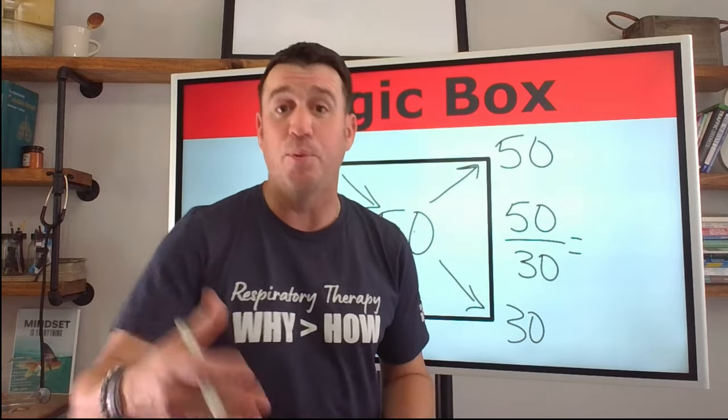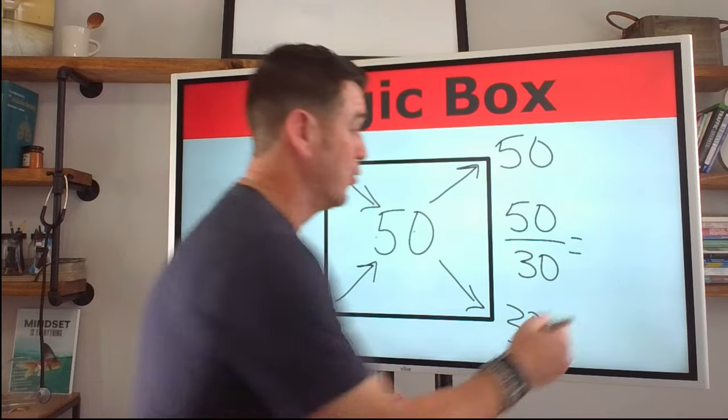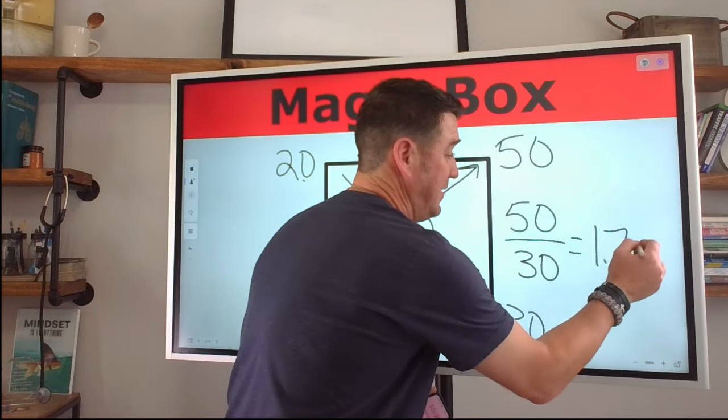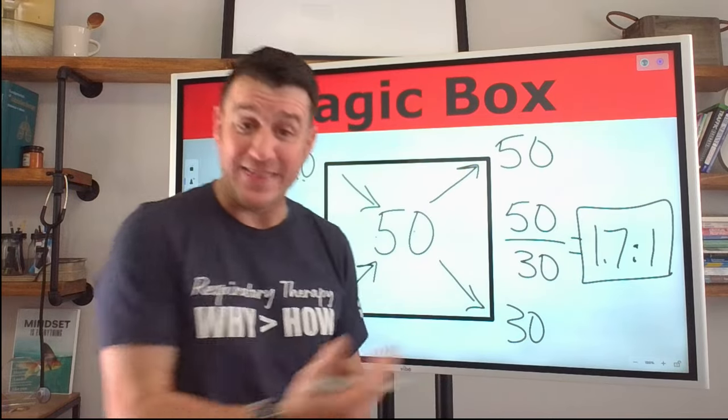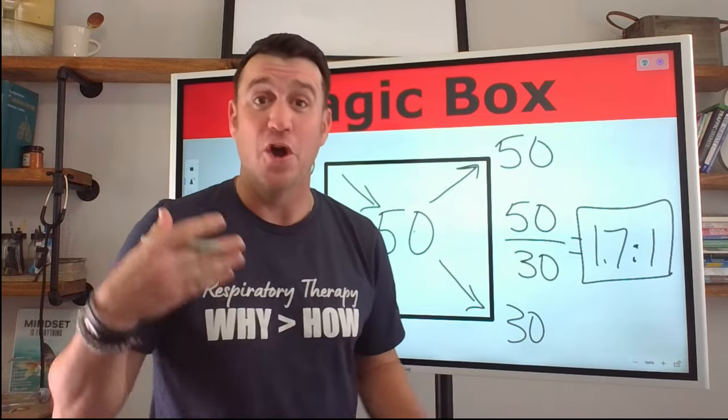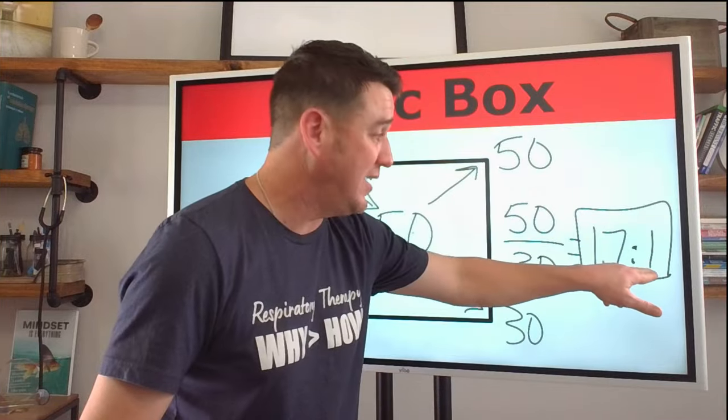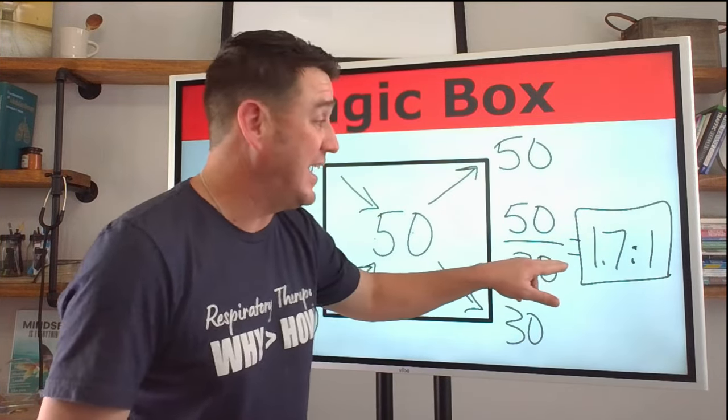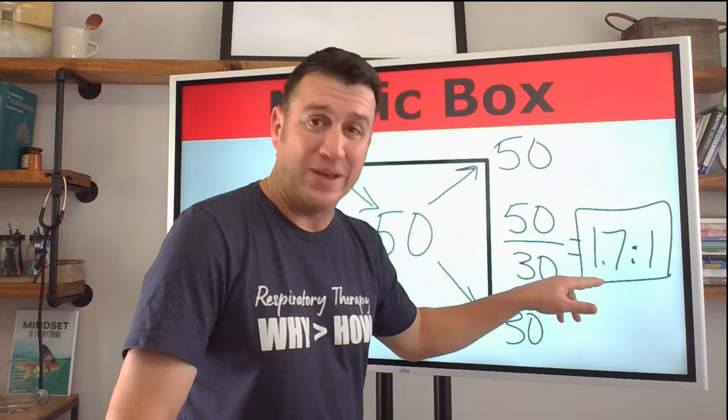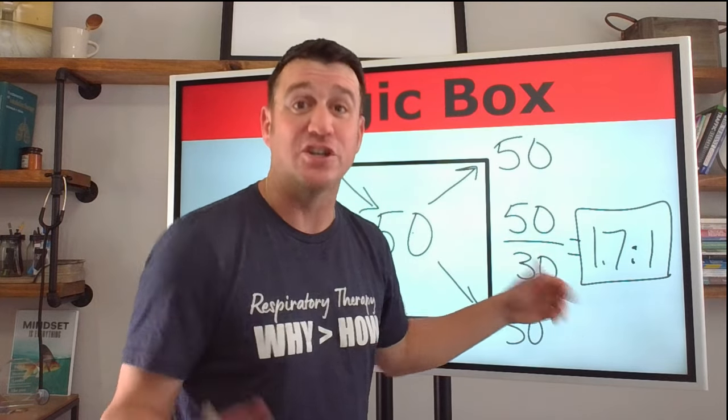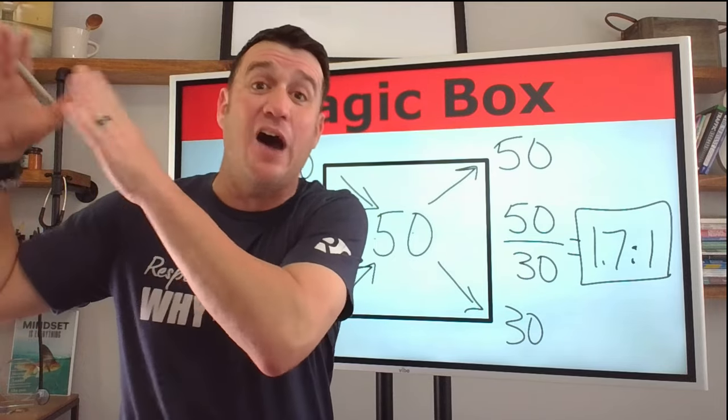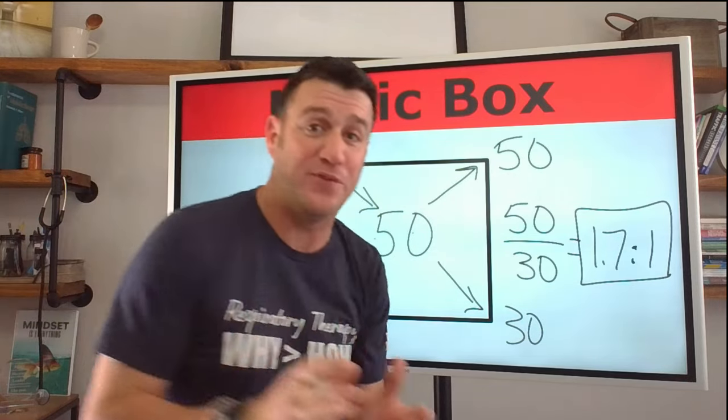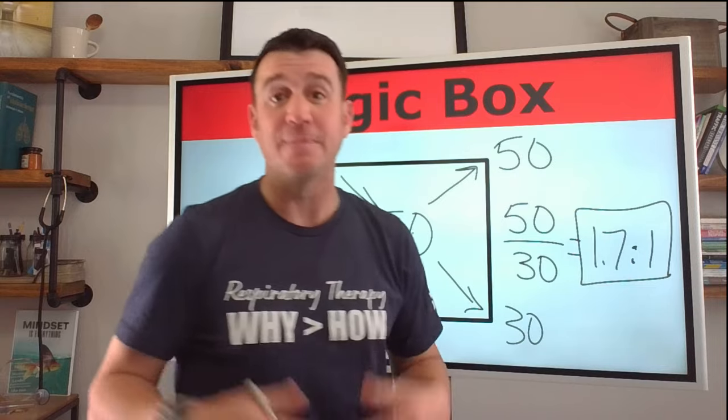Well, it's 1.7, 1.6666. So we're going to say this is 1.7 to one. And that's our air to oxygen ratio. What does that mean? For every one liter of oxygen that we're set on, we're bringing in an additional 1.7 liters of room air to get it from 100% coming out of the flow meter to 50% to be delivered to the patient.